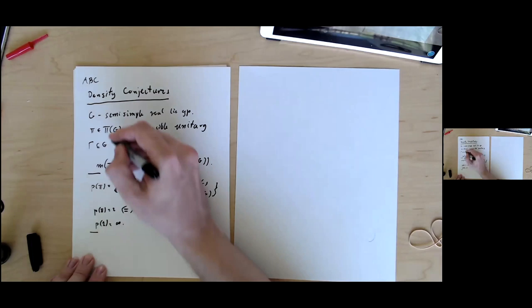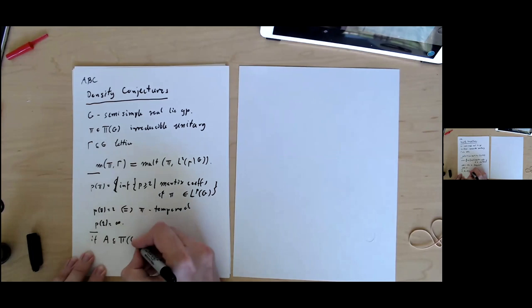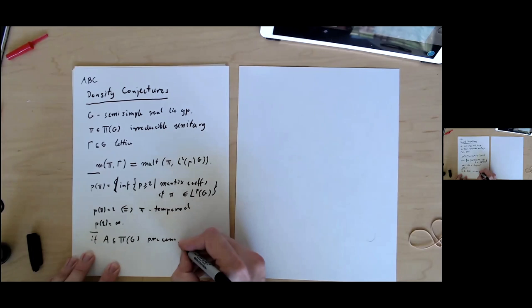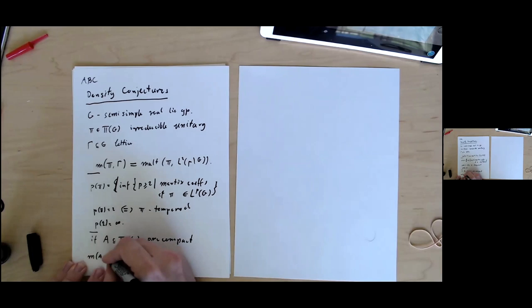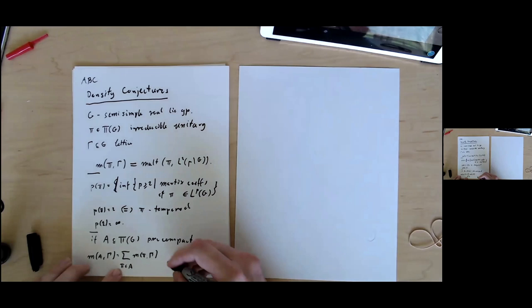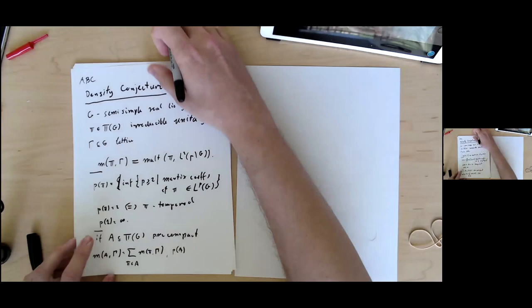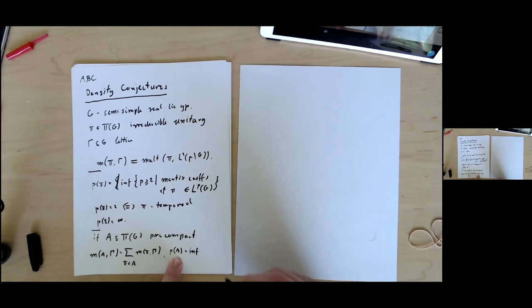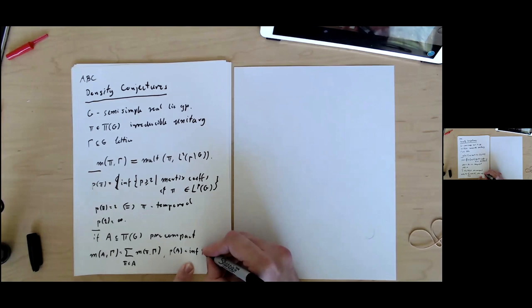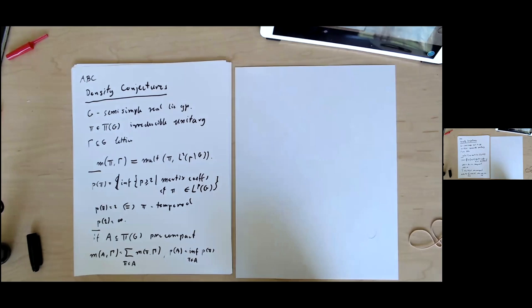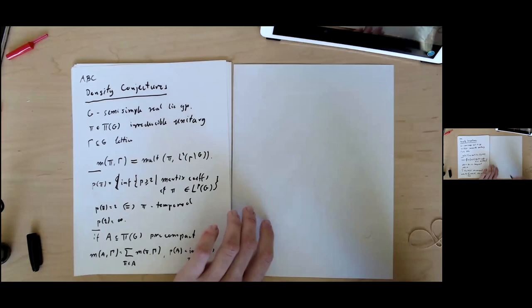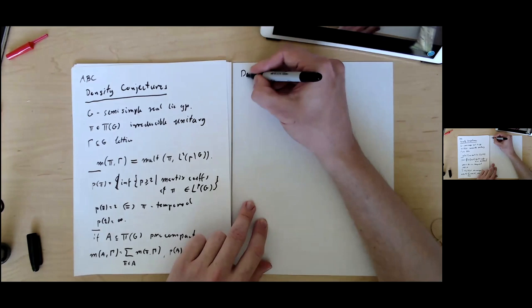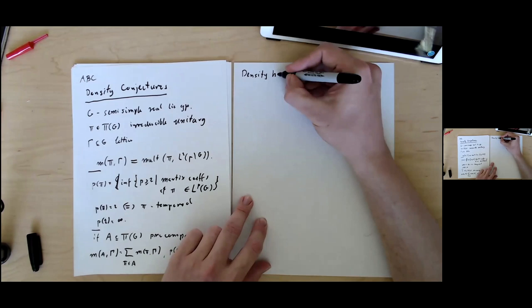We will extend those definitions to precompact subsets of the spectrum. If A is in pi G hat precompact, then I will write m A gamma for the sum of all multiplicities of pi in A in gamma, and p of A for the infimum of p pi as pi varies through the zip A. I think I'm ready to state the density conjecture or density hypothesis, sometimes it's called density hypothesis.